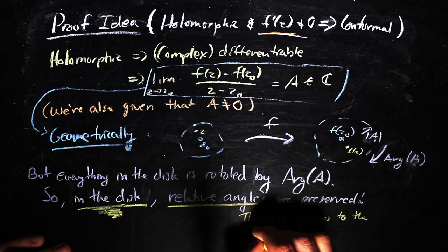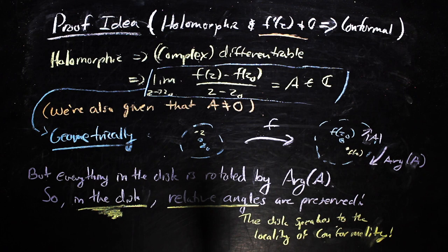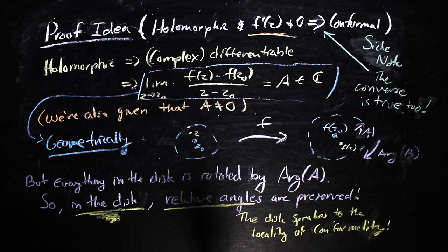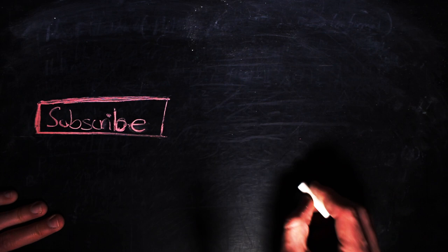Now, being in the disk was super important, because that whole business with it acting like a scalar multiple function doesn't always work globally. If you want, it would be a good exercise to think about why the converse statement is true, too. But in terms of what we needed to get through for the next video that I'll be doing, we're all squared away. Anyway, that was a little introduction to conformal mappings. We'll get into some really cool conformal mappings next time, but that's all I have for you today.